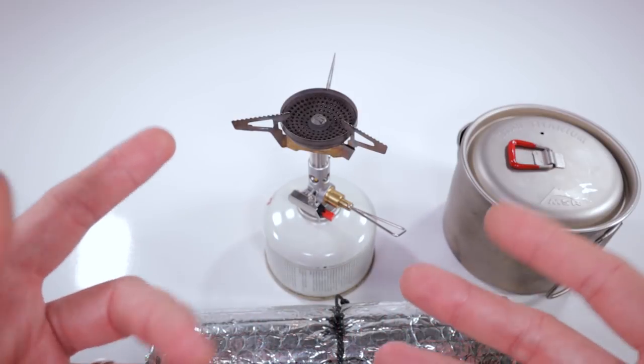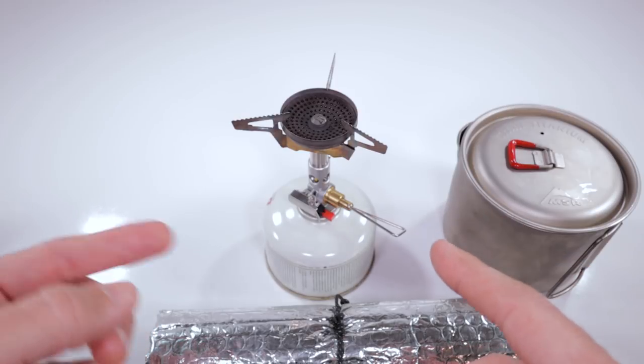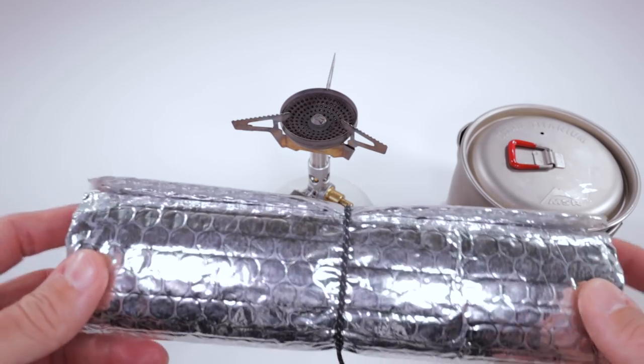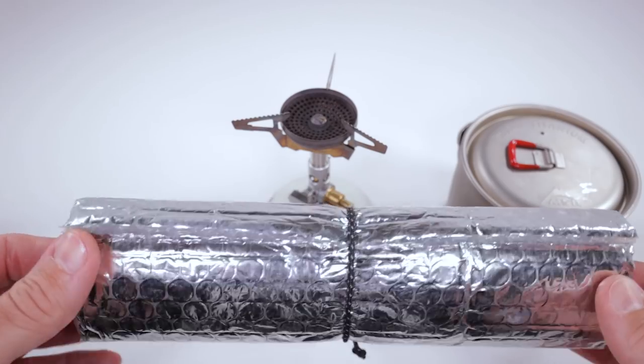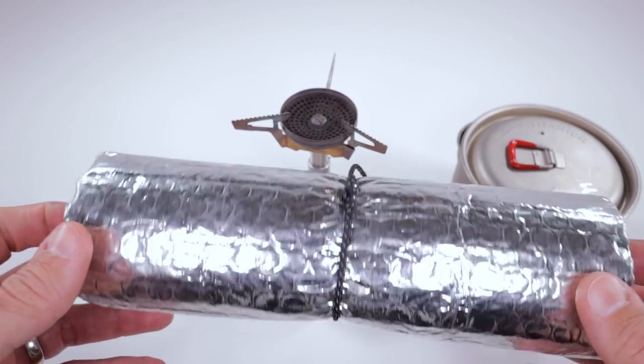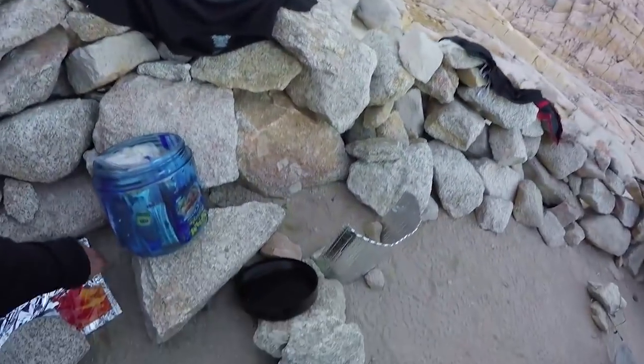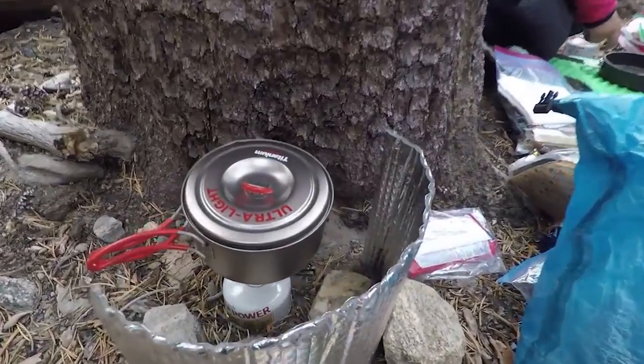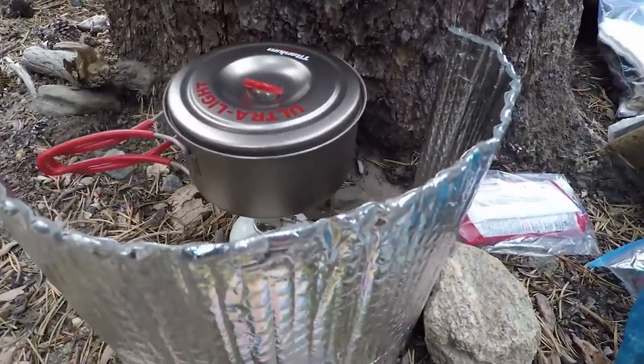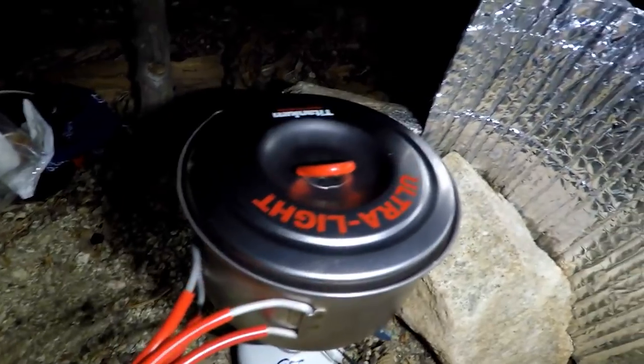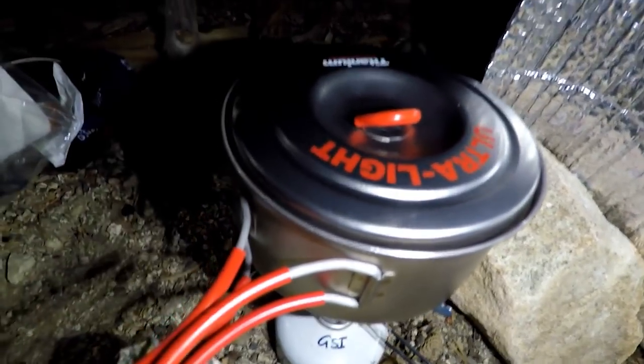The next thing I want to look at is the actual options that I use for windscreens. The one thing that I probably use more than anything when I don't have rocks available is this piece of reflectix. I'm going to cut in some video of me using this reflectix. This has been with me for at least a couple years. What's really nice about this thing is that it clicks all three options - it's easy to use.